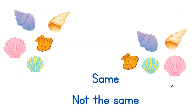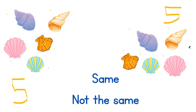Keeping that in mind, let's look at the next one. We have shells. How many shells do we have on the left-hand side? We have 1, 2, 3, 4, 5. There are 5 shells on the left-hand side. How many shells are there on the right? There are 1, 2, 3, 4, 5. There are 5 shells on the right as well. Are they the same shells? Yes, they are. Are they the same number? Yes, they are. Do they look different in the way they are placed? Yes, they do. But are they the same? They are. So our answer is: same.